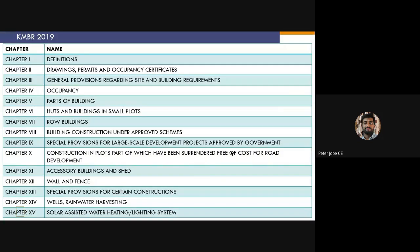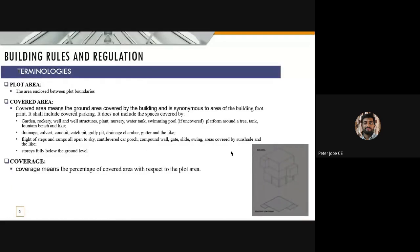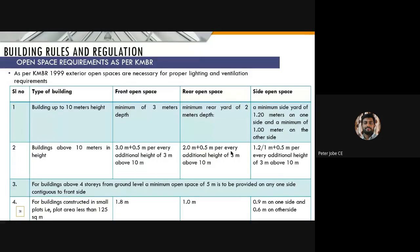For a building constructed in a panchayat, we refer to Kerala Panchayat Building Codes, and for municipal buildings we adopt Kerala Municipal Building Rules. There were some amendments in 2019. We discussed about the chapters in Kerala KMCR 2019 and the definitions included in each chapter. There were some terminologies discussed in the last class — mainly permit site, setback line, and open space. Open space means the setback distance from the boundary of the plot.